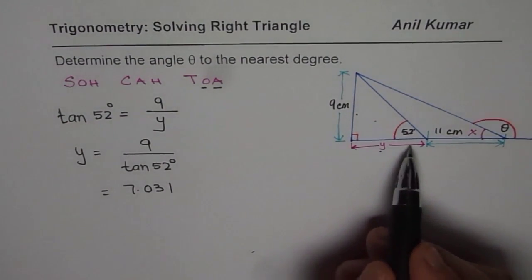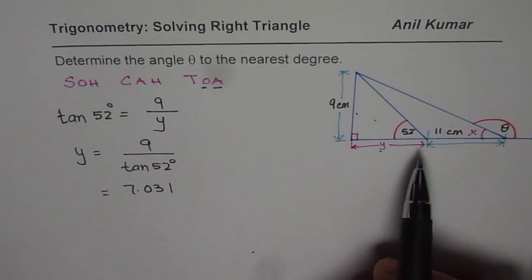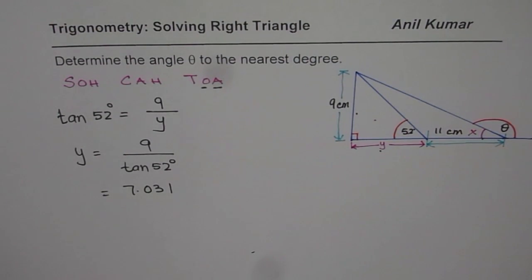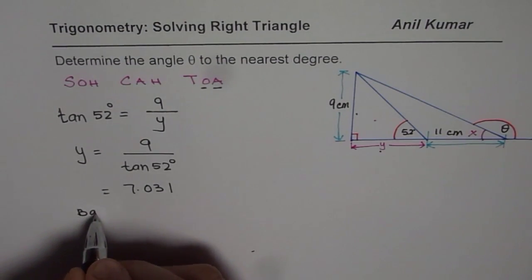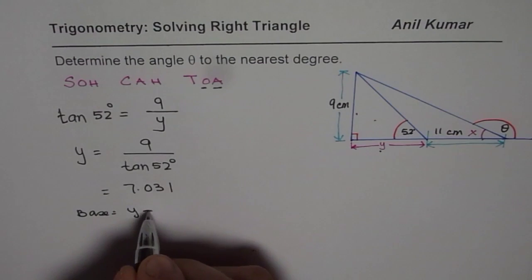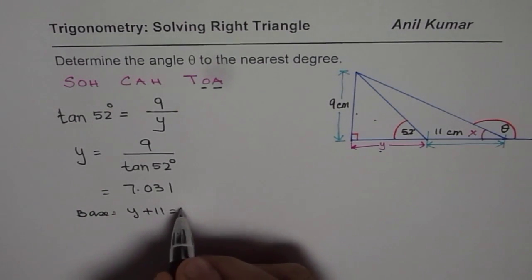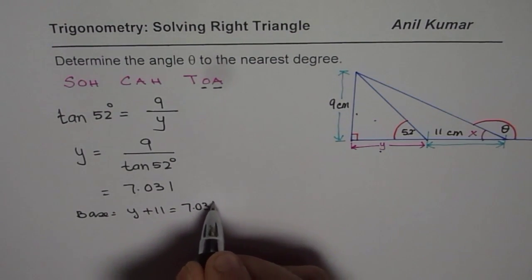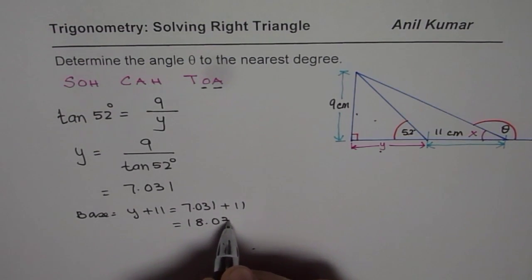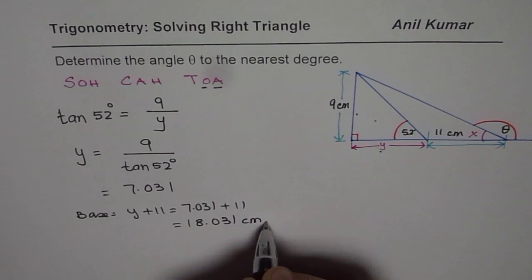So now we know y. How does that help us? Knowing y, we can find the base of big triangle. So base is how much? So we say base of the triangle is y plus 11. y plus 11, that is 7.031 plus 11 or 18.031 of course in centimeters.